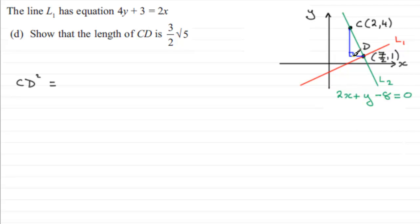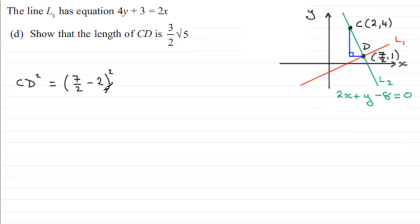When working out the horizontal distance, it's the difference between the two x-coordinates: 7 over 2 and 2. So we've got 7 over 2 minus 2 — the difference in the x-coordinates — and we square it. It doesn't matter if you wrote 2 minus 7 over 2 and then squared the result, because a negative value when squared turns out positive.